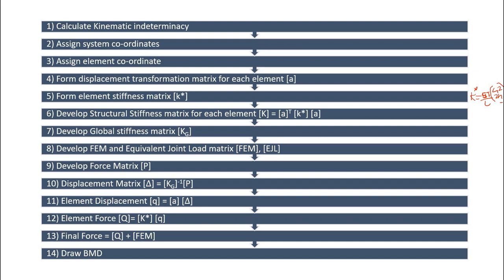Step 11 is to find the element displacement, calculated using q equals a times delta, where a is the displacement transformation matrix for the entire structure. Combining all element transformation matrices into a single matrix and multiplying by the displacement matrix gives the element displacement. Element force can then be calculated using Q equals K-star times q, where K-star is the element stiffness matrix for the entire structure and q is the element displacement. Finally, we compute the final force or moment by adding the element force and the fixed end moment.